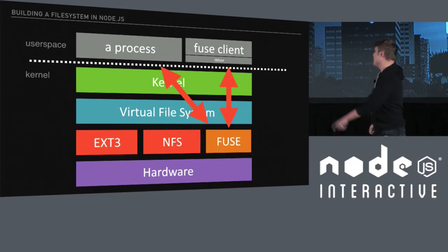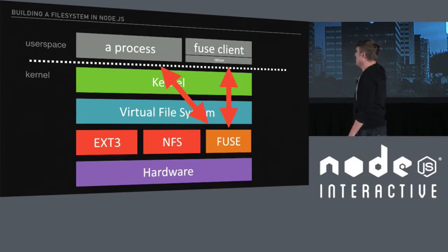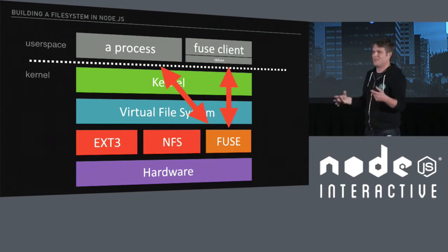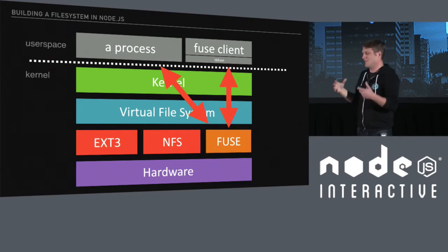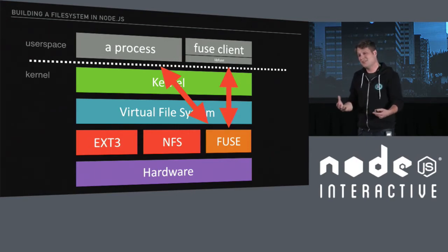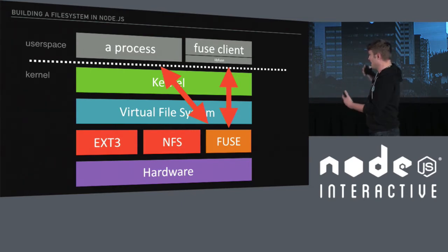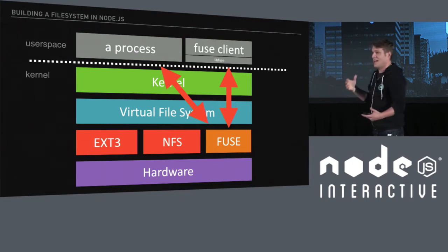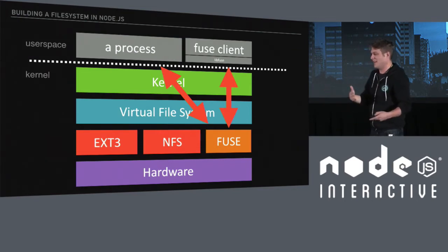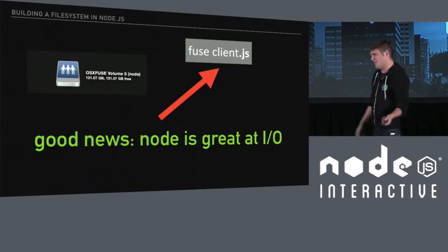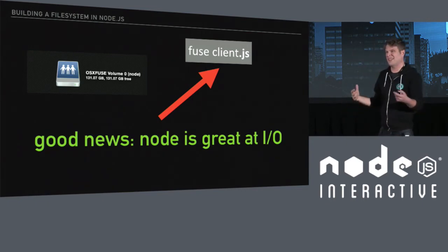One note about user space and the kernel: Unix-like operating systems do have — I like to think of it as sandboxing — where any given normal user process does not have completely unrestricted access to all system resources. One of the major motivations is you don't want any process to read and write arbitrary memory and take down the entire system. One of the benefits and selling points of Fuse is that the file system itself is running in user space. So if your Fuse file system has bugs — which, as you're developing these in programming languages, inevitably you'll crash the file system — it's pretty easy to force unmount it and you're good to go.